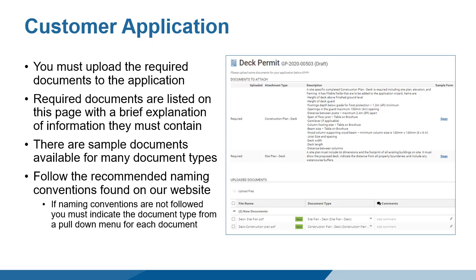You must upload all documents required for your application. The application lists all required documents and outlines what information is required for each type of document. There are samples available for many document types to assist you in preparing your application. A naming convention has been created to make uploading documents more efficient and remove the need for manually selecting the document type for each upload. All documents must be provided as part of the application submission.